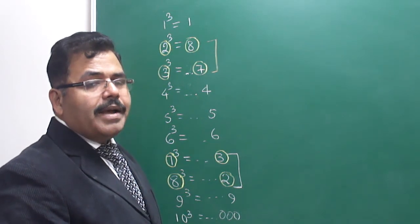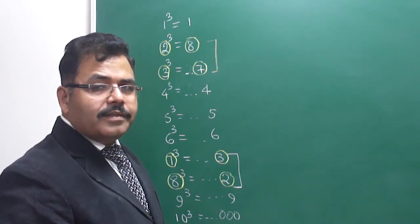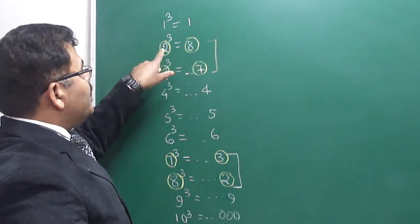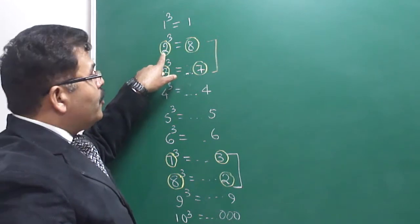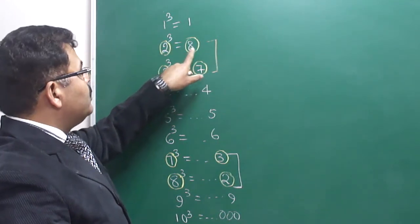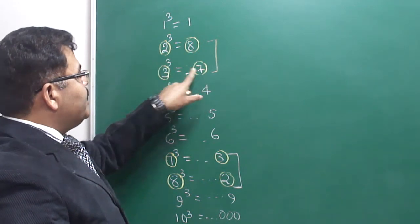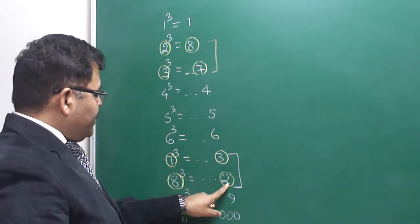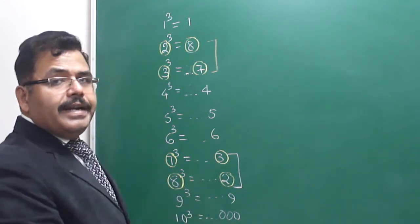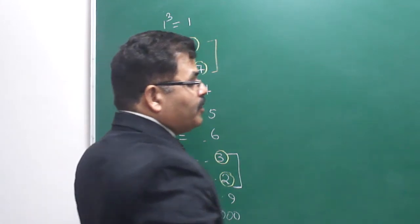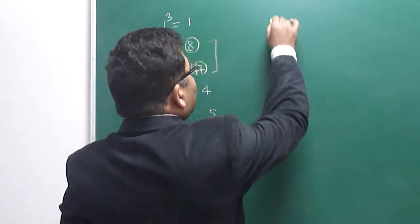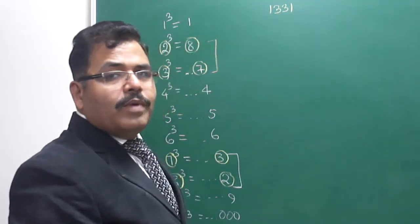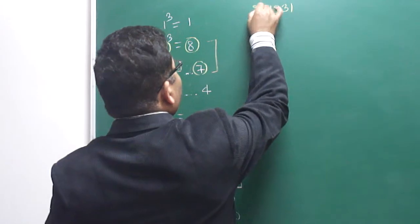Now, suppose you have to find cube roots of any number. If 8 is at the unit place, then the unit place of the cube root must be 2. If there is 7, then unit place must be 3. If there is 3, then unit place must be 7. If there is 2, then unit place must be 8. Now try to solve some questions. Suppose you have to find the cube root of 1331.